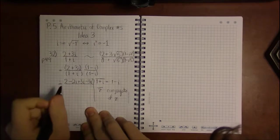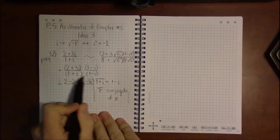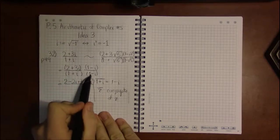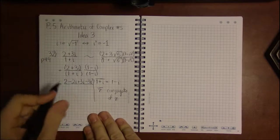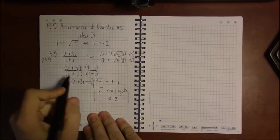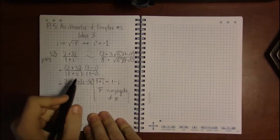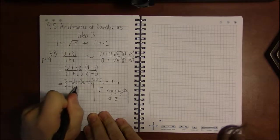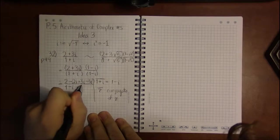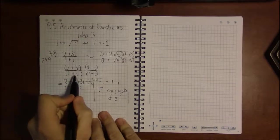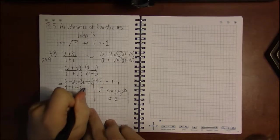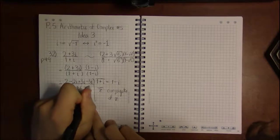And then in the denominator, I distribute this, or foil these two out. 1 times 1 is 1. 1 times minus i is minus i. i times 1 is i, or plus i. And i times minus i is a minus i squared.